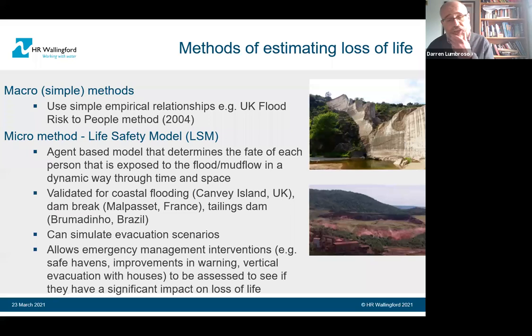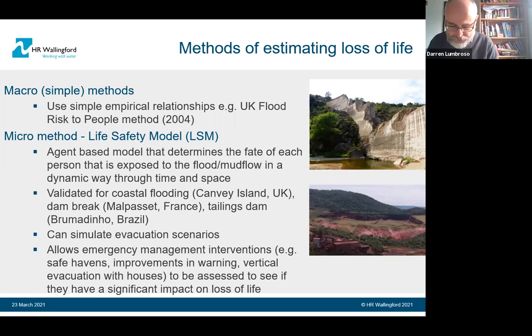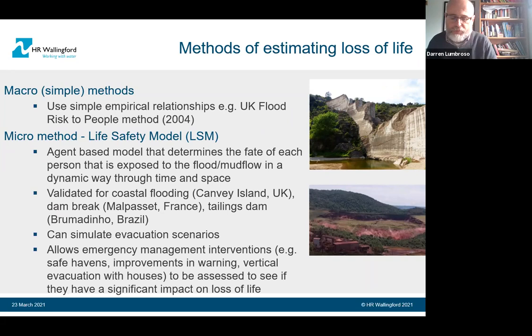I'll repeat this a few times: there's a lot of uncertainty in estimating loss of life — it's an art as well as a science. The purpose of these models isn't to give you an exact estimate of fatalities — you'll never get that. The key importance is to look at the number of fatalities and then look at whether a simple or more complex intervention can reduce those fatalities to zero and improve your emergency plans. You will never get an accurate loss of life figure; there will always be huge uncertainty.